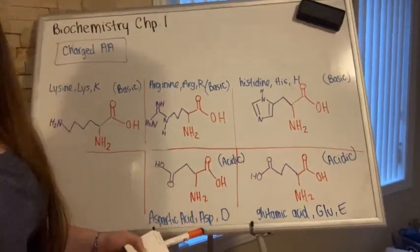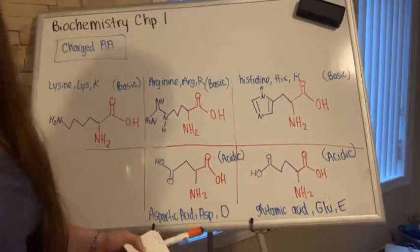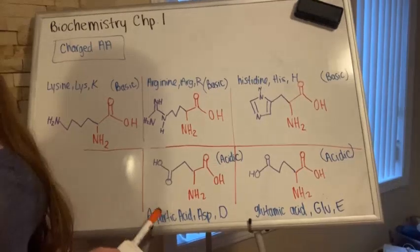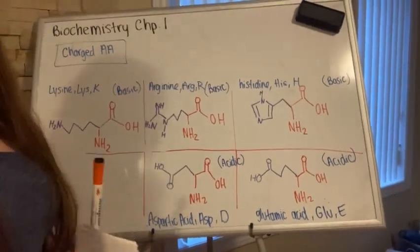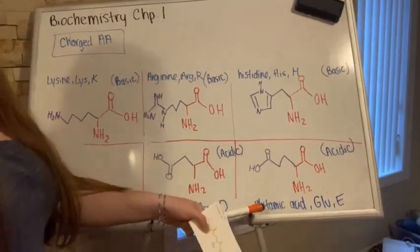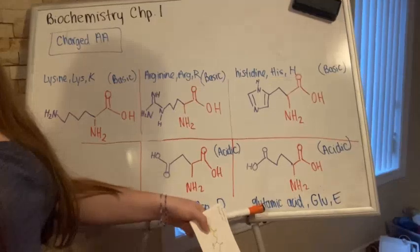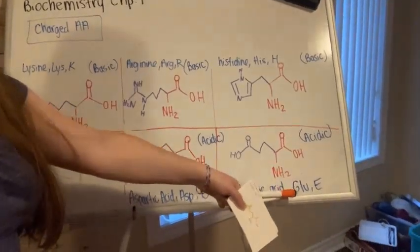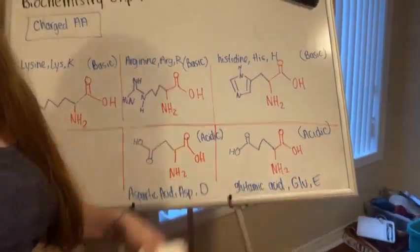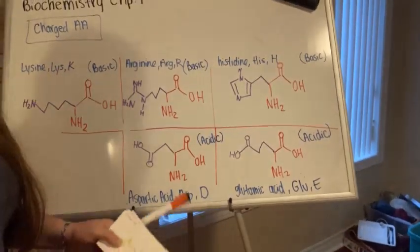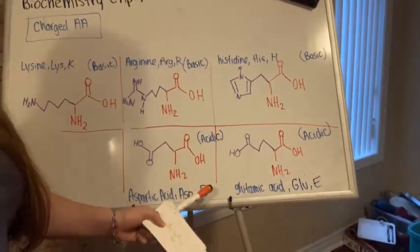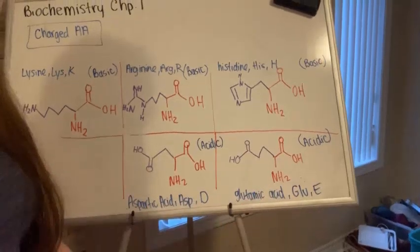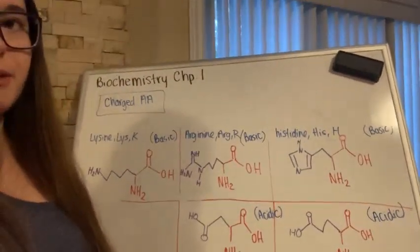Aspartic acid has A-S-P as its three-letter abbreviation and D as its one-letter — the hard D in aspartic helps remember it. Glutamic acid has E as its one-letter abbreviation. A helpful trick: A, B, C, D, E — aspartic is D, glutamic is E.